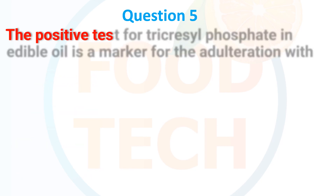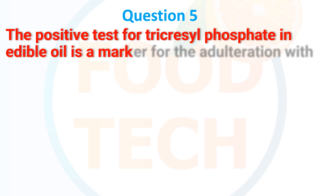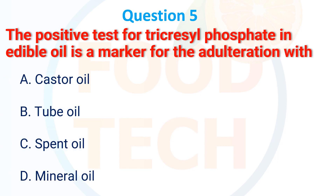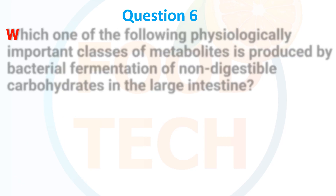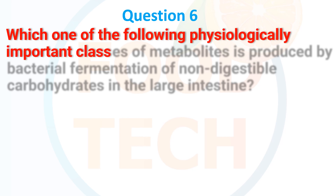Question 4: The positive test for tributyrin phosphate in edible oil is a marker for adulteration with — a. Castor oil. b. Tube oil. c. Spine oil. d. Mineral oil. The correct answer is mineral oil.